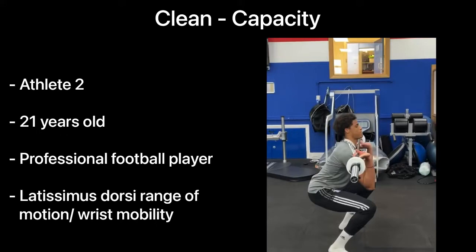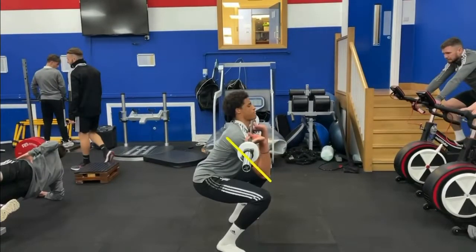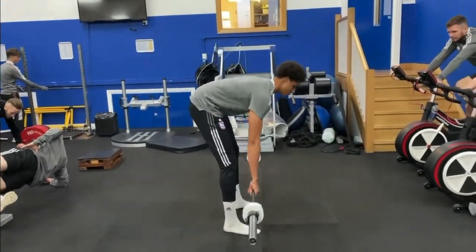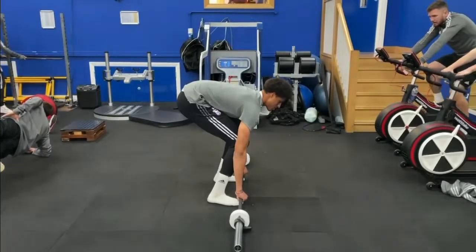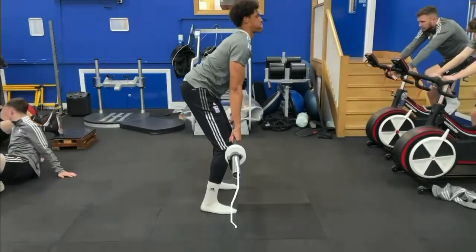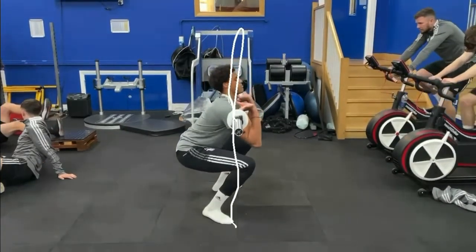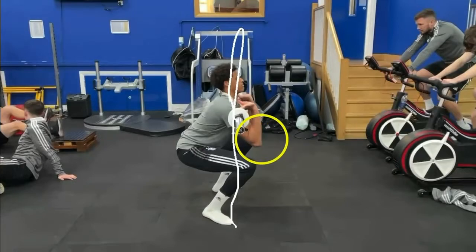For athlete two there was a capacity issue with the clean. The latissimus dorsi range of motion and the wrist mobility were the main factors. As the athlete is new to the movement, there is a clear skill and capacity issue, however mainly the capacity issue in terms of the catch. The elbows in the catch position should be pointing forward at 90 degrees. The red line indicates 90 degrees and the yellow line indicates where the elbow finishes. It is clear the athlete physically cannot get the bar to rest on the anterior deltoids. There is also poor triple extension as the hips do not fully extend to meet the bar, forcing the bar upwards. The bar path travels forward instead of slightly backwards, and the hips and knees are not fully extended.